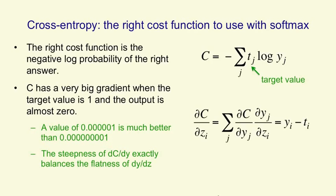And notice we need to add up across all the j's because when you change zi, the output of all the different units changes. The result is just the actual output minus the target output.